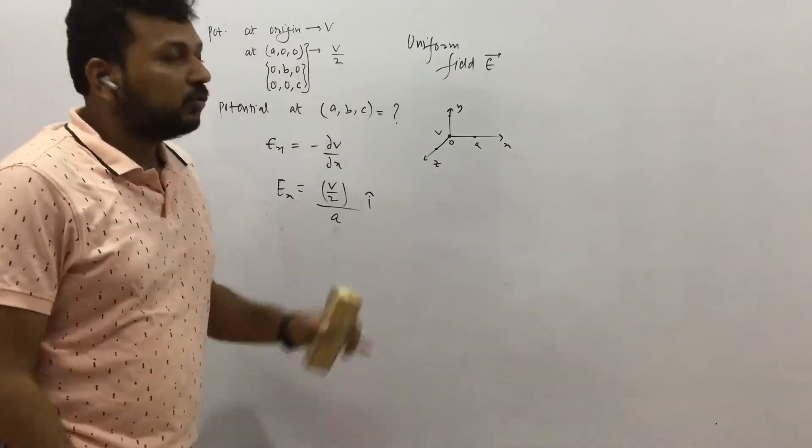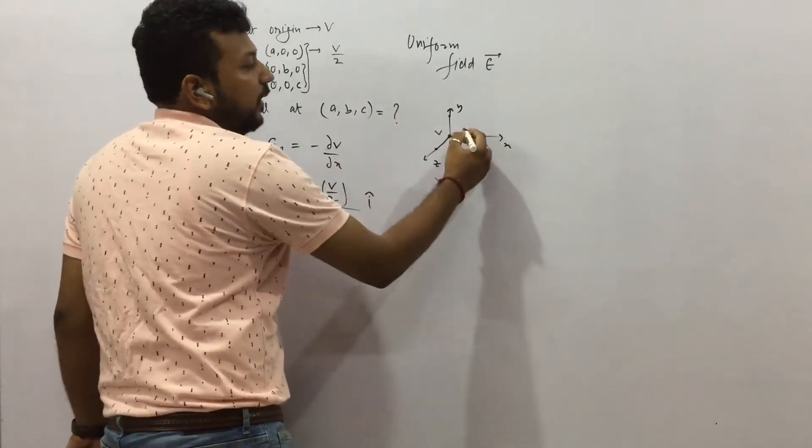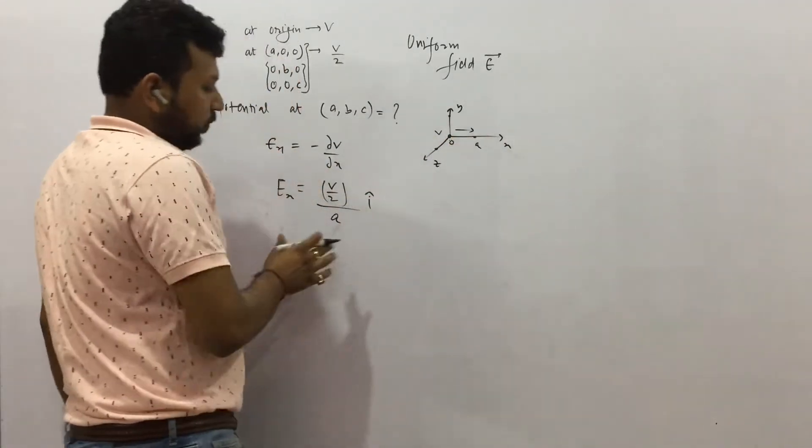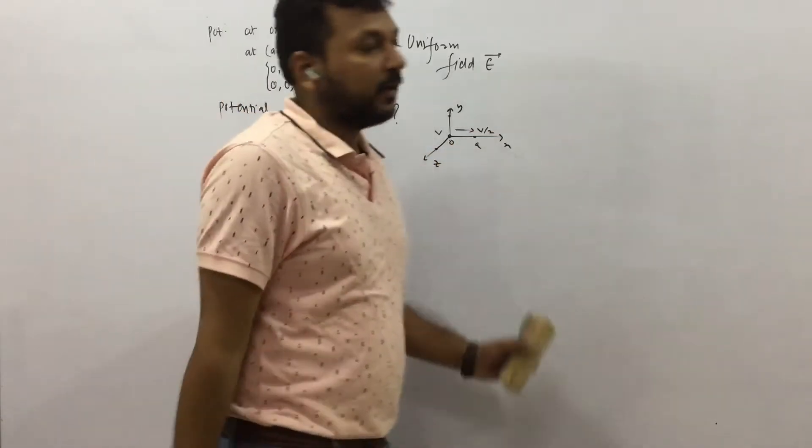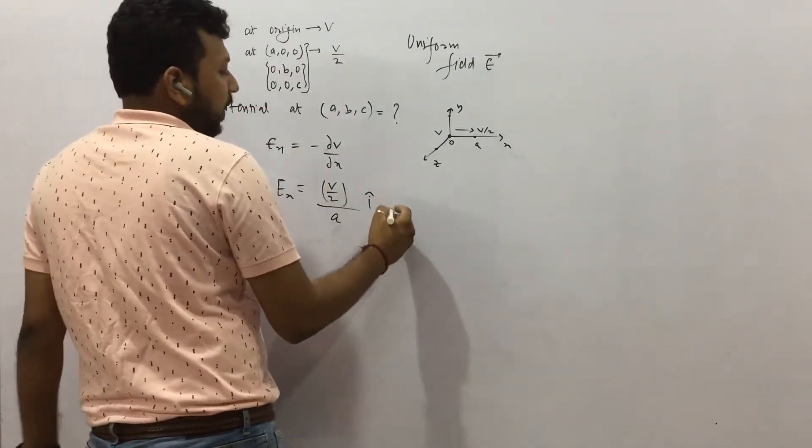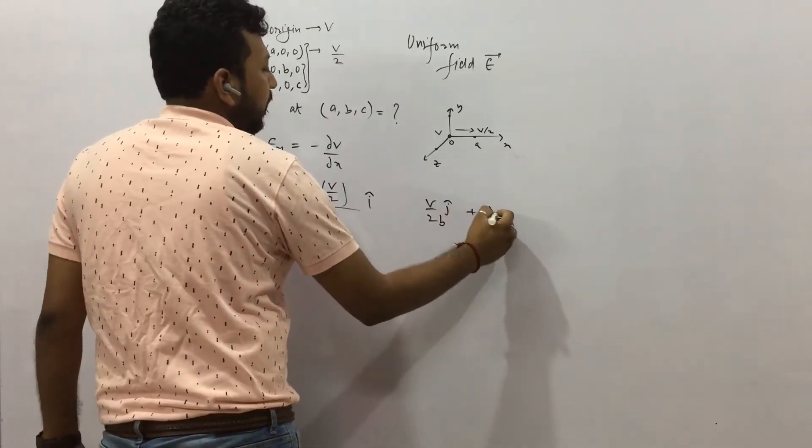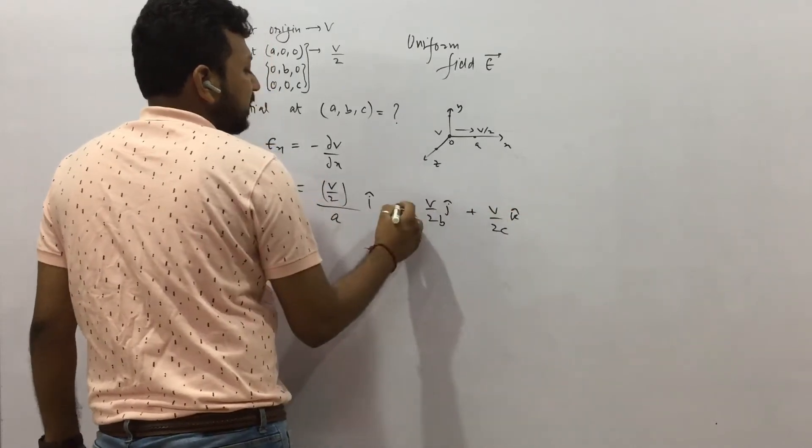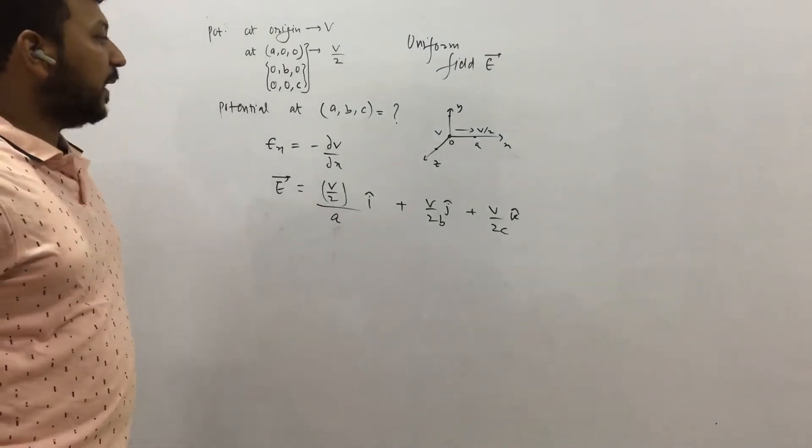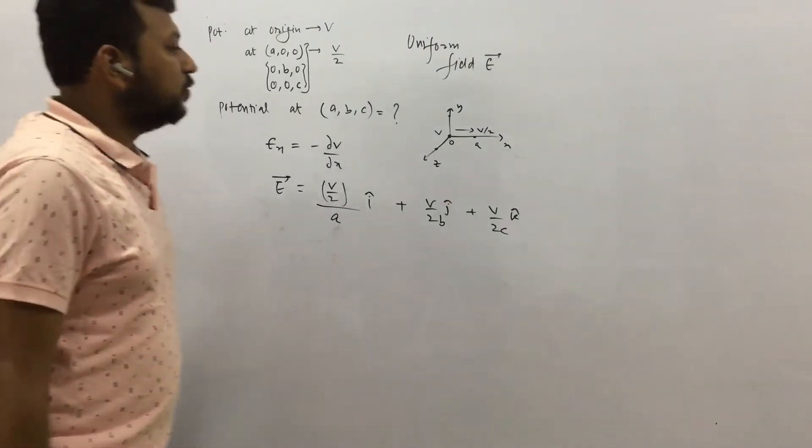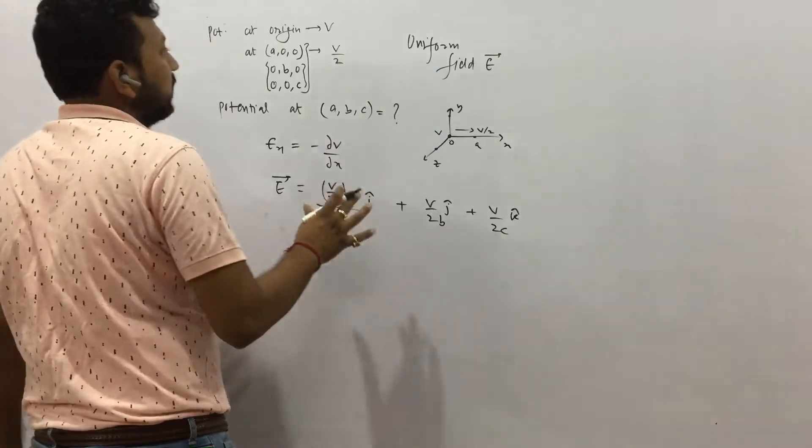So basically we can write it as minus dV by dx. Partial derivative. So let us check. So we know electric field is in the direction of decreasing potential. So we have considered electric field to be like this for X value to be like this. And yes, potential is decreasing, potential is V by 2 here. So of course it is satisfying. Similarly, we can have the other components as V by 2B, j and V by 2C, k. By the same method. So this can be the net electric field, which is satisfying all the relations if you can see. It individually will satisfy. Okay? So this is the electric field which I have generated. It is not KQ by R. This is the one.